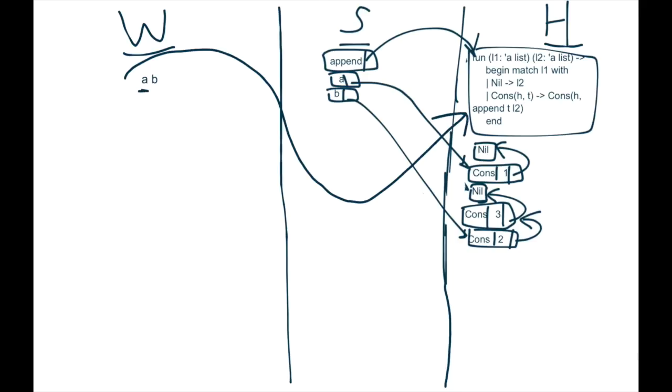Next, we do the same thing with a. We look up a and we find it right there, so we can point to it from the workspace. And then we do the same thing with b. We look up b and we find it right there, so we can point to it.